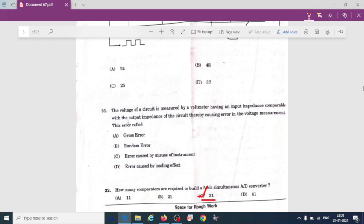Here the voltage of a circuit is measured by a voltmeter having an input impedance comparable with the output impedance of the circuit, thereby causing error in the voltage measurement. This error is called gross error, random error, error caused by misuse of instrument, or error caused by loading effect. So option D is correct: error caused by loading effect.